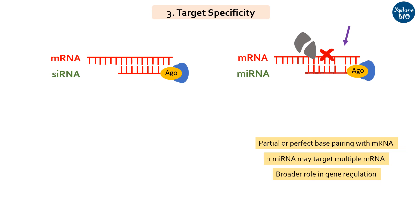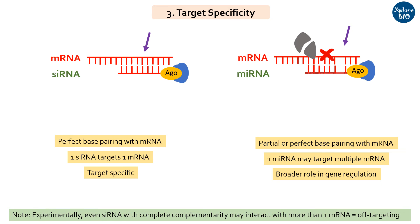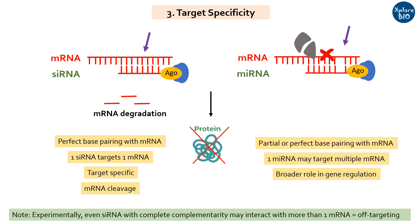siRNA, on the other hand, binds to the target mRNA through perfect or near-perfect complementarity. As a result, siRNA generally targets a single mRNA and is highly specific in action. However, there are instances where siRNA shows off-targeting effects. Therefore, siRNA designing requires effort and validation becomes crucial. Due to perfect base pairing, siRNA inhibits protein expression by cleavage of mRNA. When miRNA shares perfect complementarity, it leads to degradation of mRNA, but when pairing is imperfect, it may result in translation inhibition.